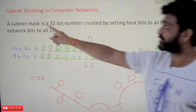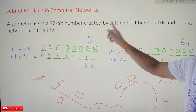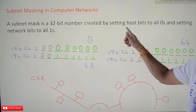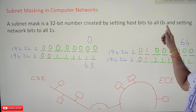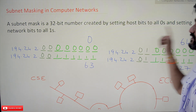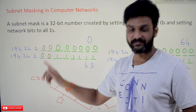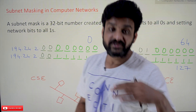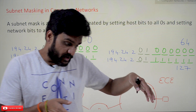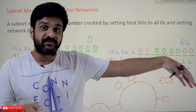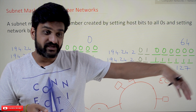A subnet mask is a 32-bit number created by setting host bits to all zeros and setting network bits to all ones. So how is the subnet mask created? It is created within the IP address itself.